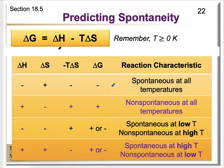Scenario 2: if delta H is positive (endothermic) and delta S is negative, then subtracting a negative number means we're actually adding a positive value to the already positive delta H. Adding a positive number to a positive delta H means delta G has no choice but to be positive as well. A positive delta G means the reaction is non-spontaneous regardless of temperature.